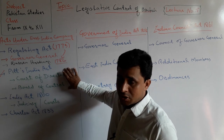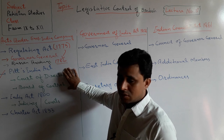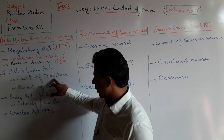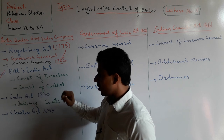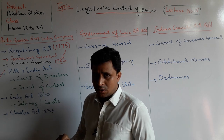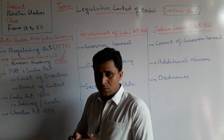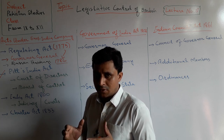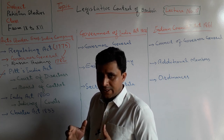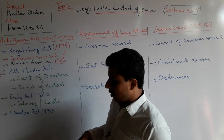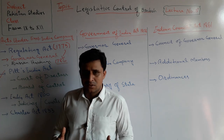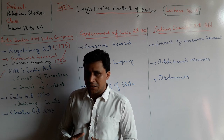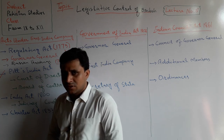Two bodies were formed: the Court of Directors and the Board of Control. These two groups of people assisted in making laws and legislation for the British East India Company.